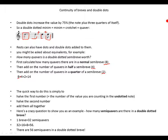Here's a crazy question to show you as an example: how many semiquavers are there in a double dotted breve? One breve equals 32 semiquavers. 32 plus 16 plus 8 equals 56. So there are 56 semiquavers in a double dotted breve.